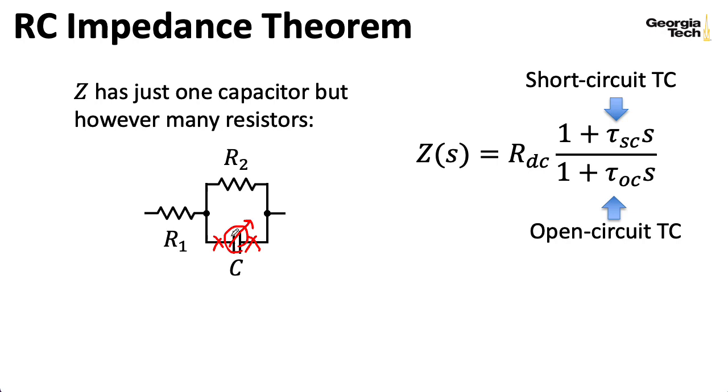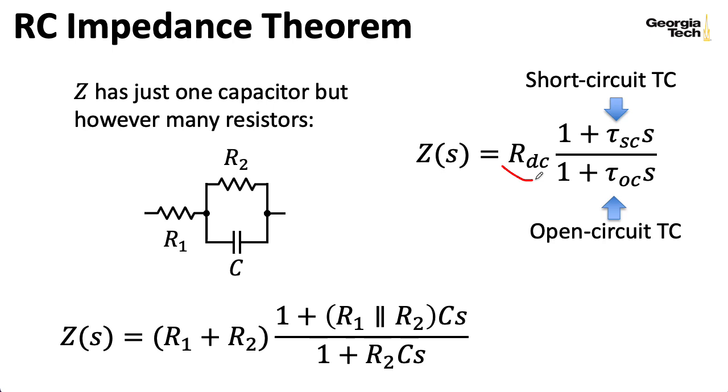In this particular example, RDC is pretty easy to compute. We just open up this capacitor and I have this series combination of R1 and R2. And I generally like to compute the open circuit time constant next because it's usually the easiest.